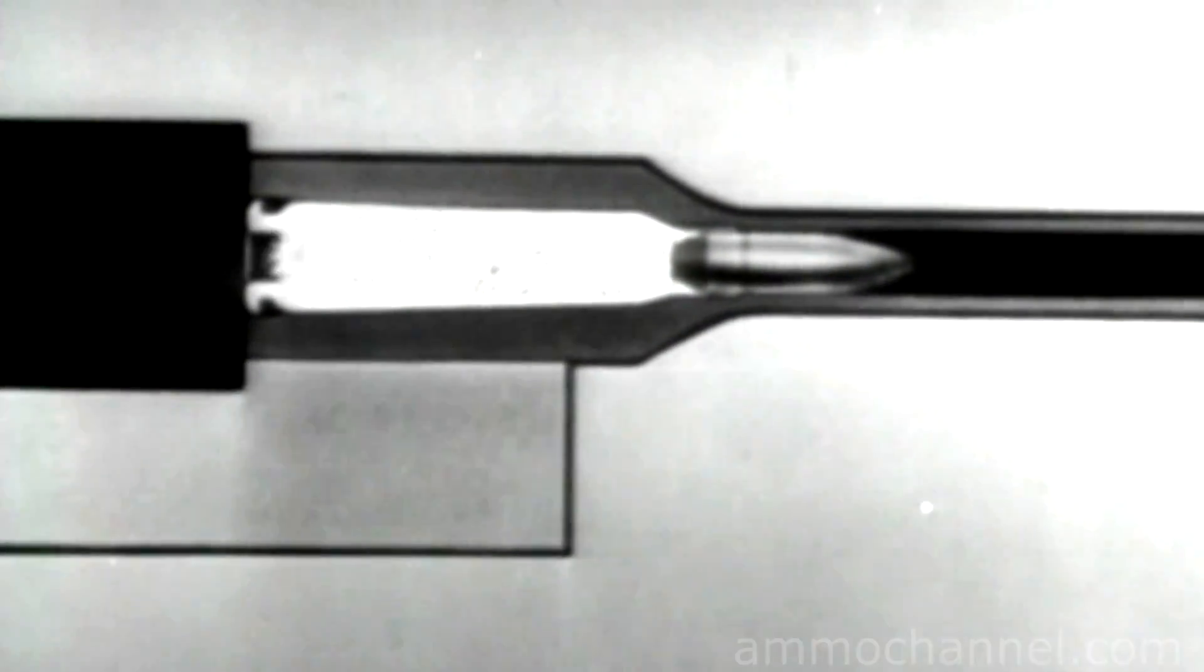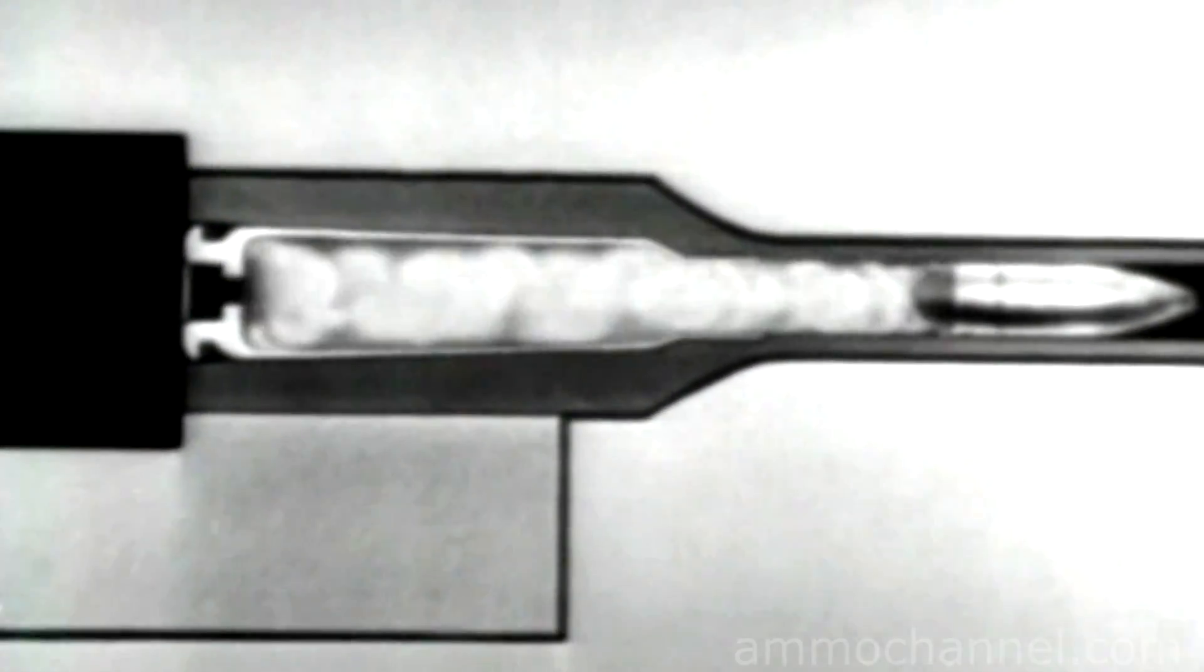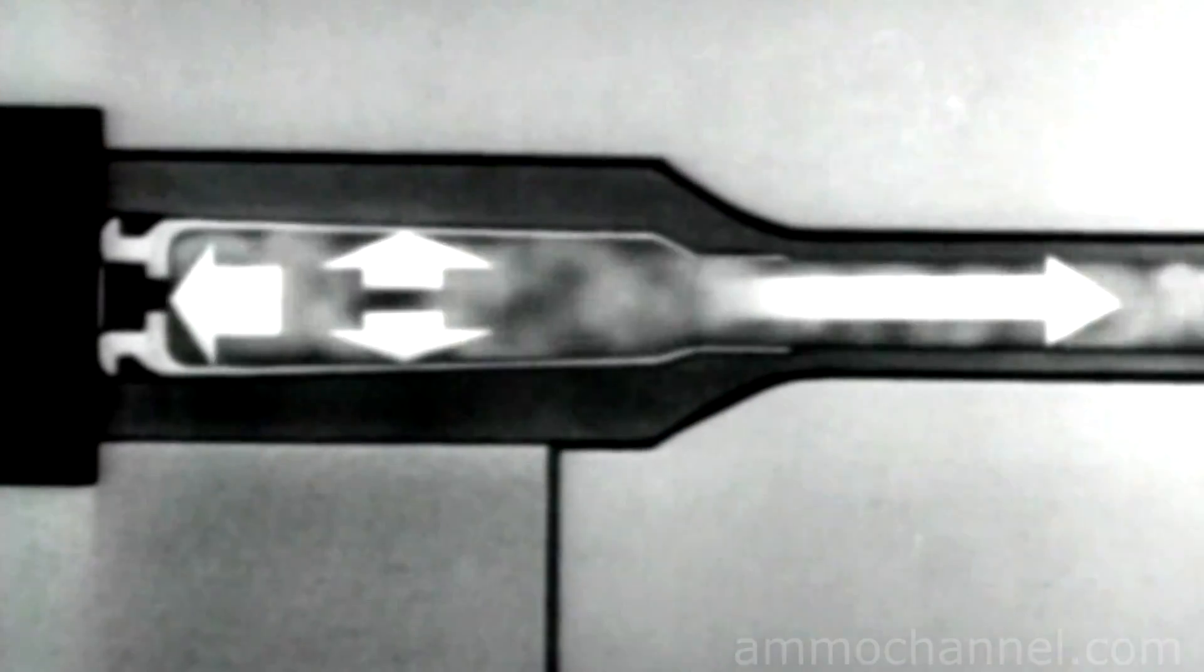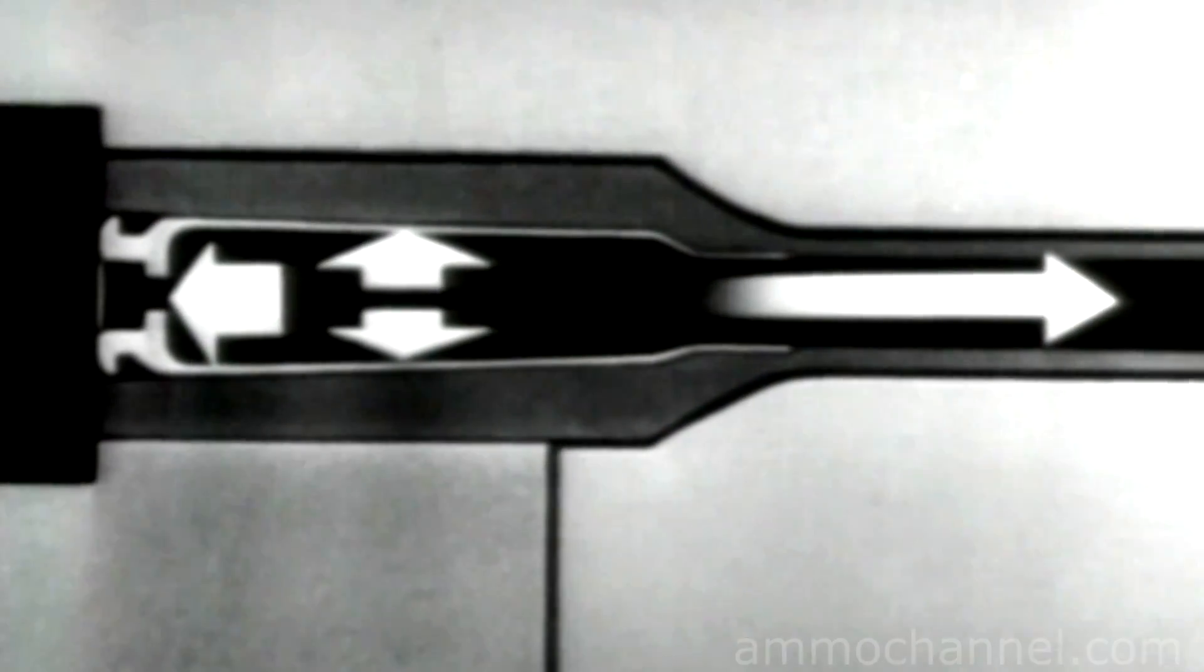When a cartridge is fired, a very high gas pressure is built up inside the case. This pressure pushes the bullet out through the barrel and also pushes in all directions. Three ways have been developed to use this force to operate the bolt. The first way is by gas operation.